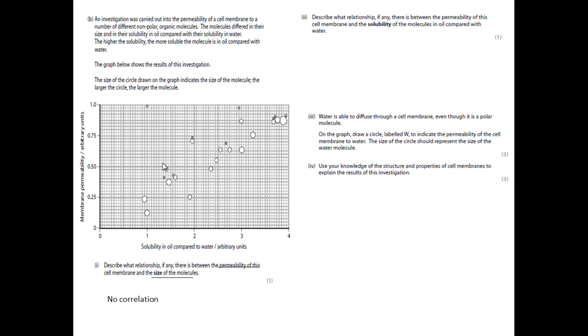Part two, describe what relationship, if any, there is between the permeability of the cell membrane and the solubility of the molecule in oil compared with the water. So this is asking for a comparison of the permeability and solubility. So clearly, the more soluble it is in oil compared with water, the greater level of permeability there is. That is reasonably straightforward.